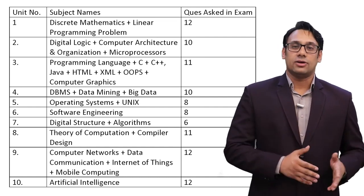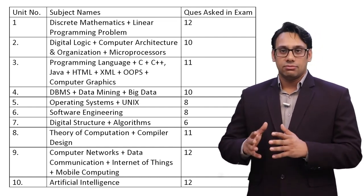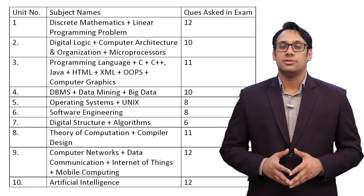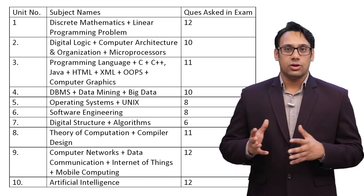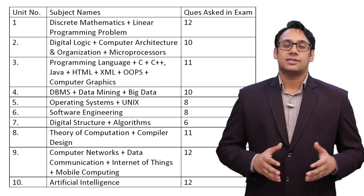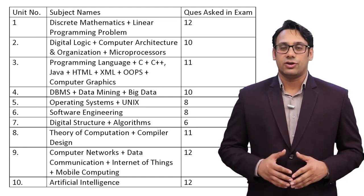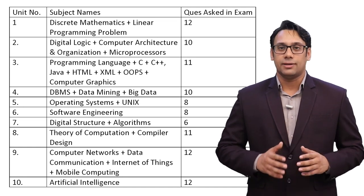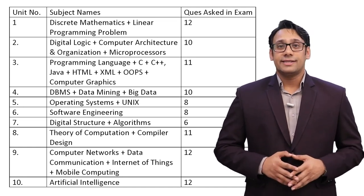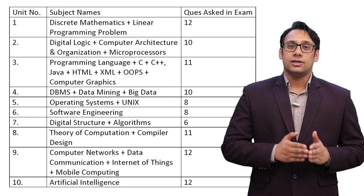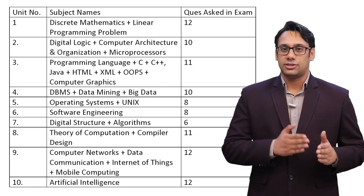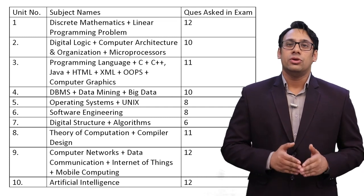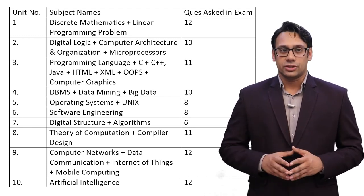The basics of discrete mathematics are going to be applied in other subjects as well — for example, in algorithms, data structures, and areas involving probability, permutations and combinations. Discrete mathematics creates the foundation for all those topics, so you cannot leave it at any point. Unit 2 covers digital logic, computer architecture and organization, and microprocessor — from unit 2 they asked 10 questions.